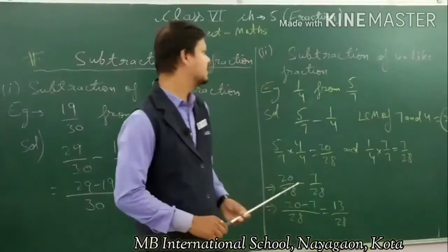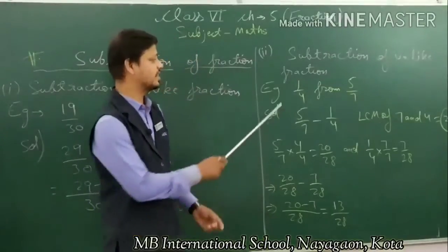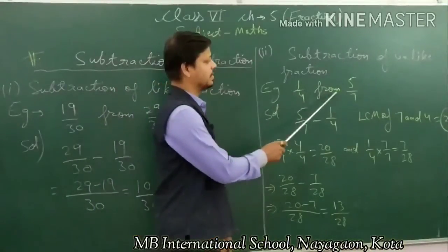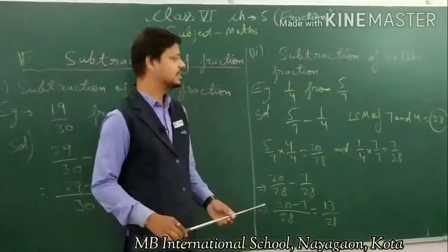Now the second topic is subtraction of unlike fractions. You have to subtract 1 upon 4 from 5 upon 7.